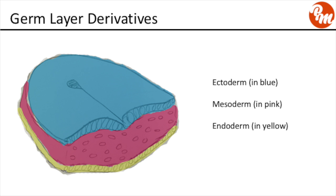This lecture is about germ layer derivatives. In the image on the left you can see three distinct layers labeled ectoderm in blue, mesoderm in pink, and endoderm in yellow. We will now consider the different organs and tissues that derive from these three layers.